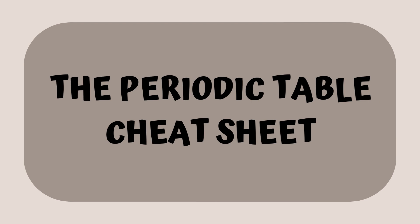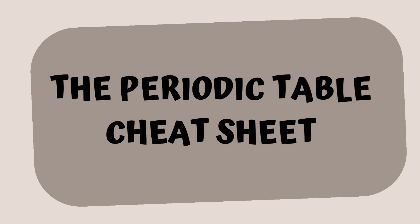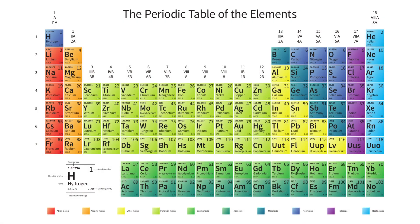In this video, we'll explore the mysteries hidden within this scientific marvel. Get ready to discover how it organizes the fundamental elements that comprise our reality. Let's start with the basics. The periodic table is a chart that arranges chemical elements by their atomic number, electron configuration, and chemical properties.